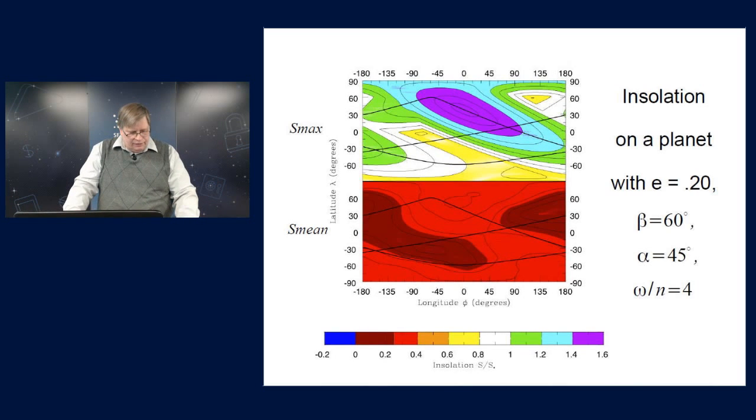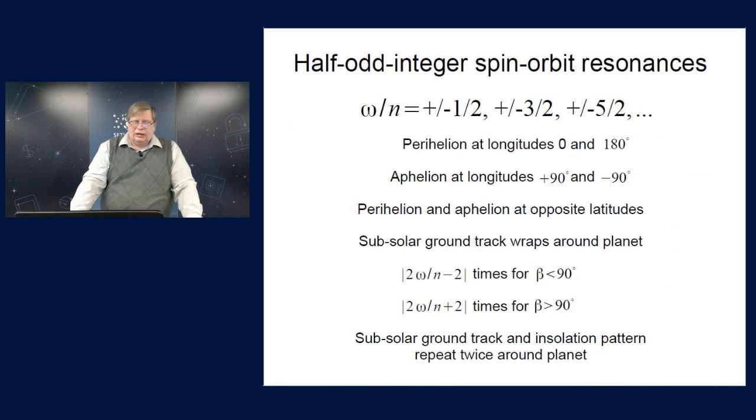So, that's the general behavior of these integer resonances. But, there's another class which are called the half-odd integer spin resonances. That's a mouthful, but the reason is that now this ratio of rotation rate to orbital motion is half of an odd integer. So, it's plus or minus a half, three halves, five halves, et cetera. And this has its own characteristics, but the important one for our purposes here is that now the subsolar ground track and the insolation pattern that goes with it repeat twice around the planet.